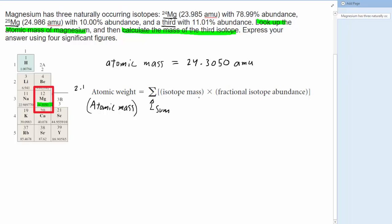So what we're going to do on the left side of the equation is simply plug in the atomic mass of magnesium, which of course we looked up in the periodic table. And then on the right-hand side of the equation, what we'll do is we'll add up the masses of each isotope multiplied by their respective fractional abundance.